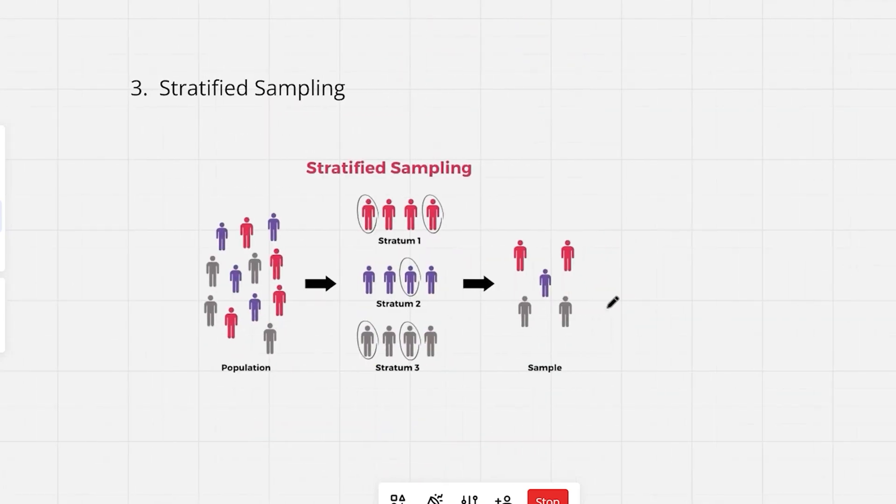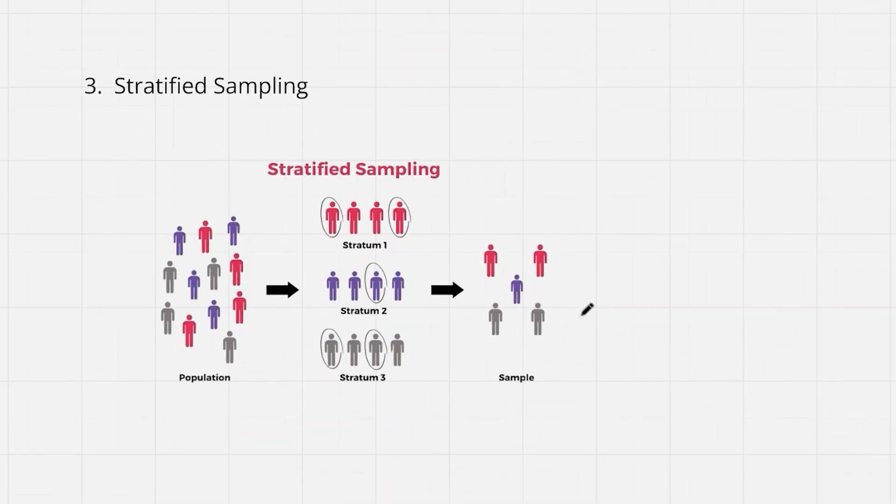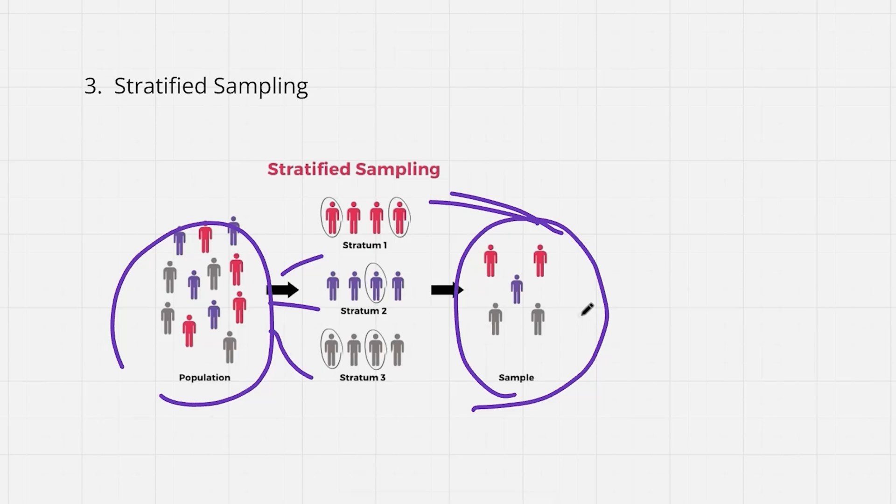Moving on to the next technique, that is stratified sampling. Stratified sampling is a method where you divide a group into smaller groups or you can also call them strata based on shared characteristics or different behavior and then take a sample from each group randomly. I have created three strata or three groups over here and now out of these three groups, I randomly select people or randomly select my data. This is what my final sample is going to look like. This helps ensure that all the groups are fairly represented in your data.